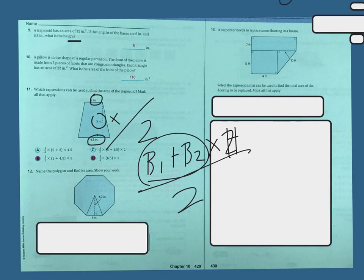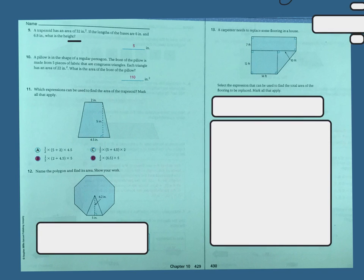Looking ahead. Name the polygon and find its area. Show your work. So this one, remember, this is similar to the one where we had the 5 pieces. So you just draw the lines connecting. And you can even look at the sides. 1, 2, 3, 4, 5, 6, 7, 8. You know you're going to have 8 sides.